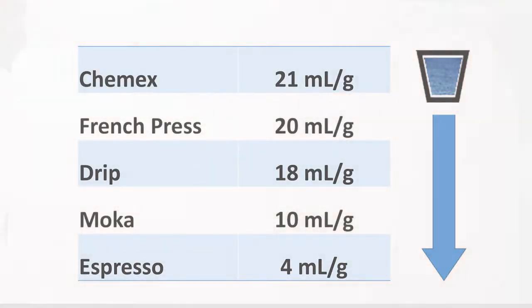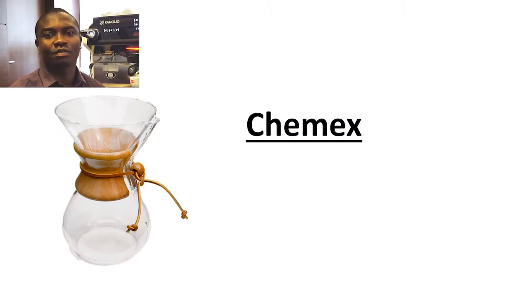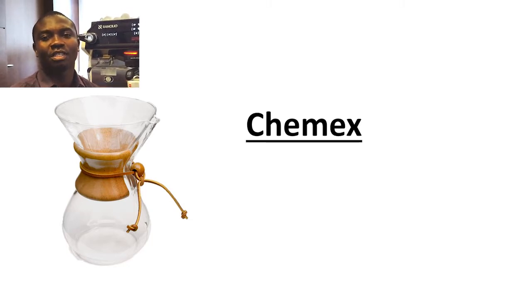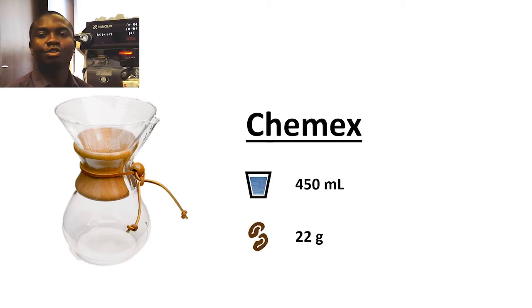This means each type of drink has its own water footprint. As you can see, drip and pour-over coffees use significantly more water per gram of coffee because the final drink has more volume. A very popular method nowadays called Chemex — popular in specialty coffee shops around the world like in the USA or South American countries — uses approximately 450 milliliters of water per 22 grams of medium to coarse ground coffee, giving a ratio of water to coffee of 21 to 1.